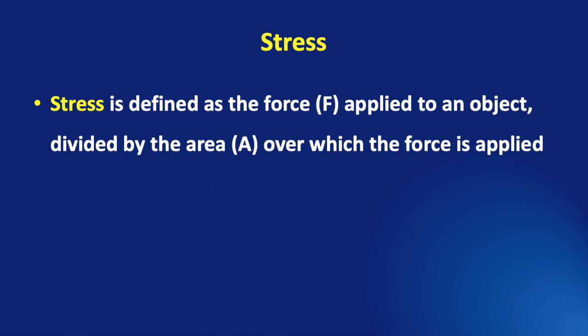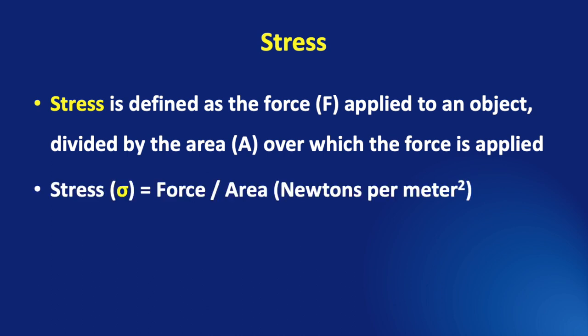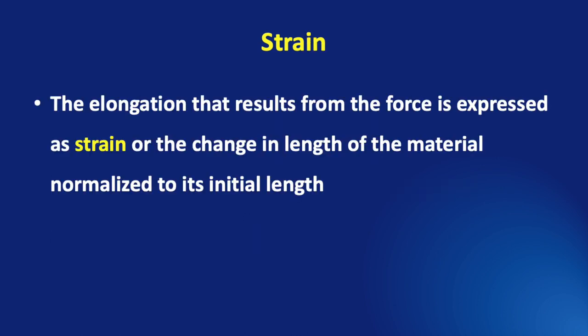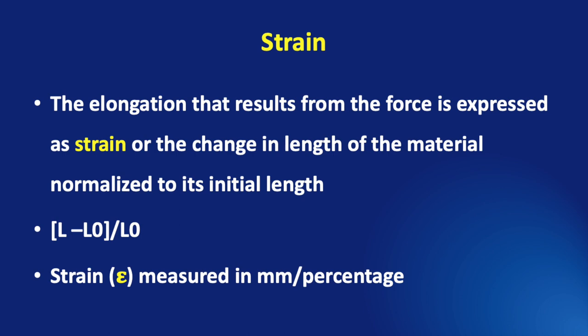Stress is defined as the force applied to an object divided by the area (A) over which the force is applied. Stress is symbolized by sigma, with the formula: force divided by area, that is newtons per square meter. The unit of stress is pascals — one newton per square meter is one pascal. This stress is mainly caused by compression forces. Strain, or the elongation that results from the applied force, is expressed as the change in length of the material normalized to its initial length — that is, (changed length minus original length) divided by original length. Strain is symbolized by epsilon and measured in millimeters or percentage.